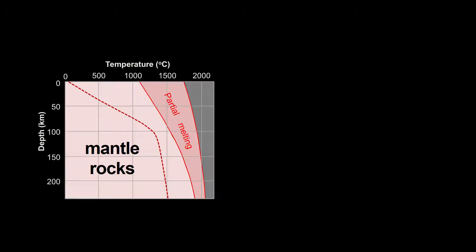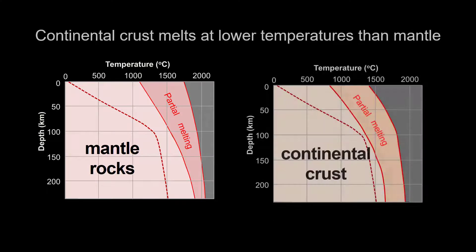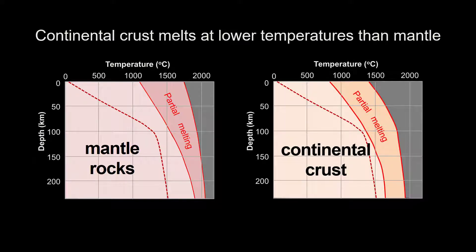Oh, and one final point. This graph was drawn for an ultramafic mantle rock with relatively high melting temperatures. If instead we were to generate a similar graph for the continental crust, the relative positions of the liquidus and solidus lines would shift to the left.